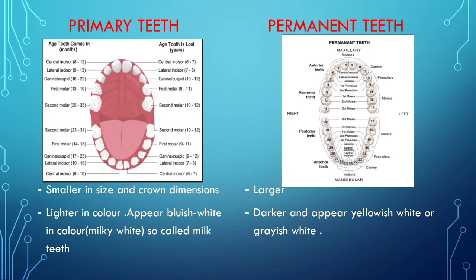You can see in the picture and distinguish them well. Primary teeth are smaller in size and crown dimensions, while permanent teeth are larger. Primary teeth are lighter in color — also known as milk teeth because of their milky white, bluish-white appearance. Permanent teeth are darker and yellowish-white or grayish-white in color.